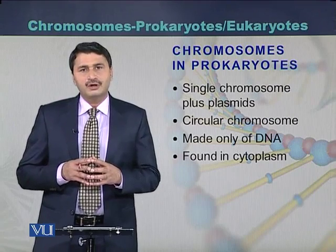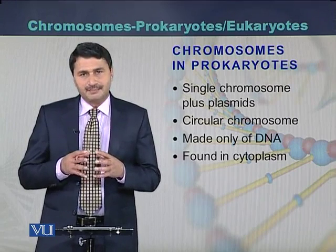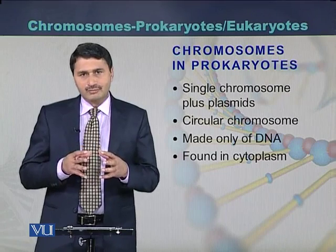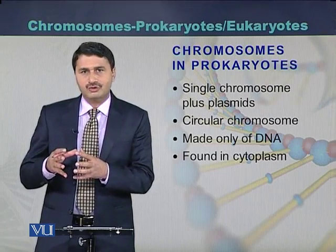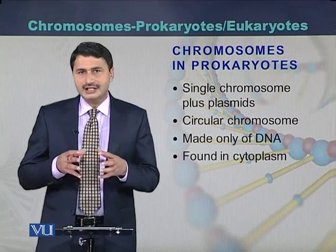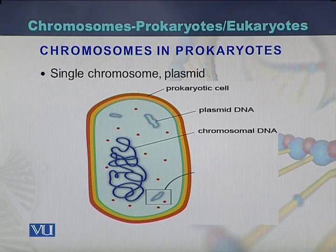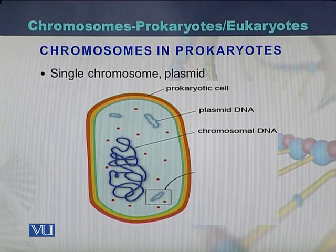In prokaryotes, the chromosome is made up of DNA, and there is also a plasmid — an extrachromosomal DNA — present in the cytoplasm. The main chromosome is a single circular chromosome. Plasmid is an extra chromosomal DNA also present in the prokaryotic cell. There is no clear nucleus; the region where the chromosome is present is usually called the nucleoid region.